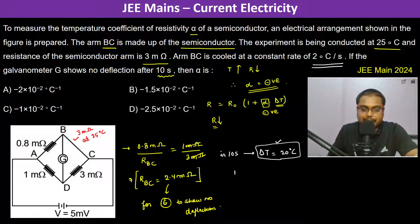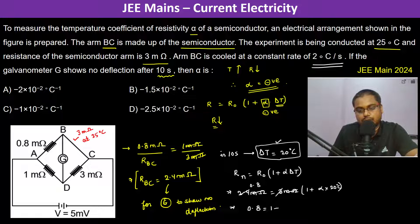So therefore we can write that now R new is equal to R0 times 1 plus alpha delta T. So now what is the new? It is 2.4 million equals previously it was 3 million into 1 plus alpha into 20 degree centigrade. So this becomes 0.8 equals 1 plus alpha into 20 degree centigrade.